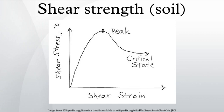State can be described by terms such as loose, dense, over-consolidated, normally consolidated, stiff, soft, contractive, dilative, etc. Structure refers to the arrangement of particles within the soil mass — the manner the particles are packed or distributed. Features such as layers, joints, fissures, slickensides, voids, pockets, cementation, etc., are part of the structure.